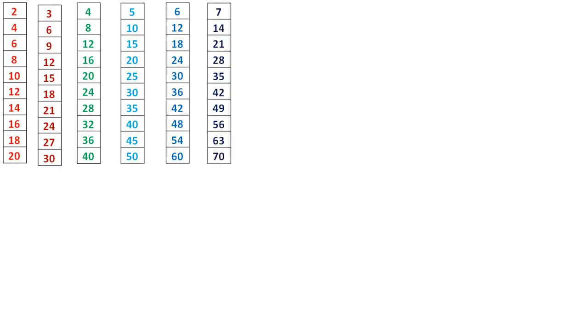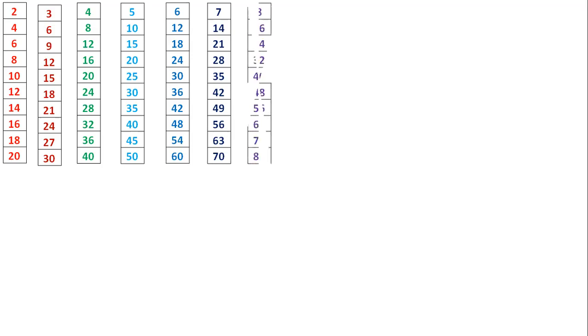7 times 1 is 7, 7 times 2 is 14, 7 times 3 is 21, 7 times 4 is 28, 7 times 5 is 35, 7 times 6 is 42, 7 times 7 is 49, 7 times 8 is 56, 7 times 9 is 63, 7 times 10 is 70.